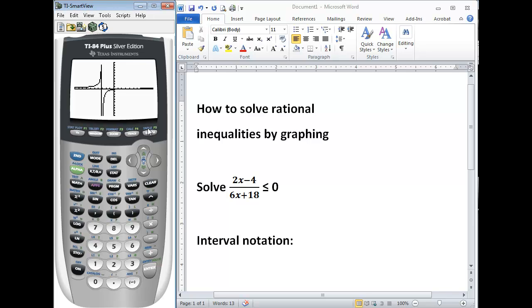You can also see that represented in your table. Since table is in blue if we press second and graph now we can see our table. So if we scroll back to negative 3 we have an error because that's our asymptote.